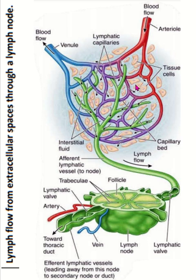This is the extracellular fluid space, and this is the arterial, this is the capillary, this is the venule, this is the vein. Fluid accumulates — extracellular fluid accumulates here in the tissue space and this fluid is drained through the blood vessels. But some fluid remains. This remaining fluid enters within the lymph capillary.